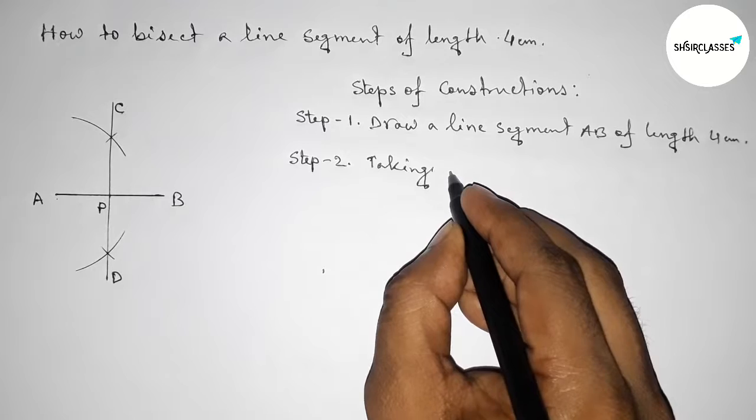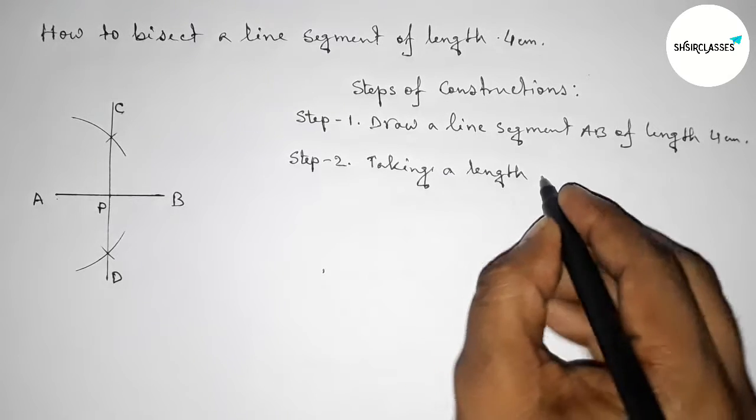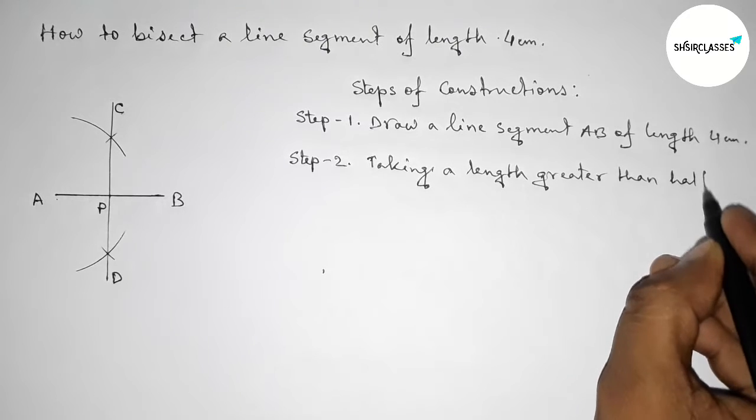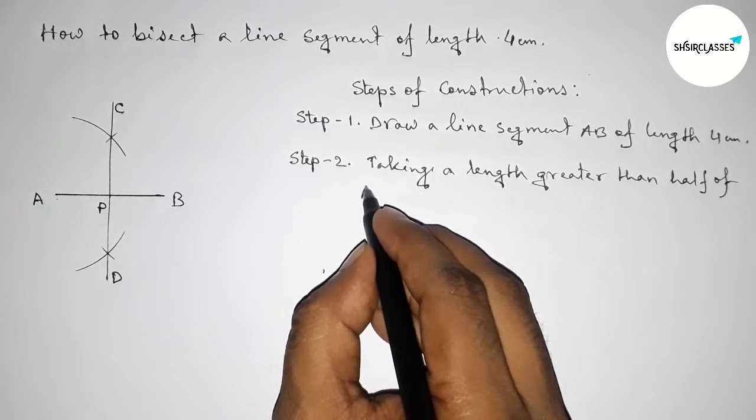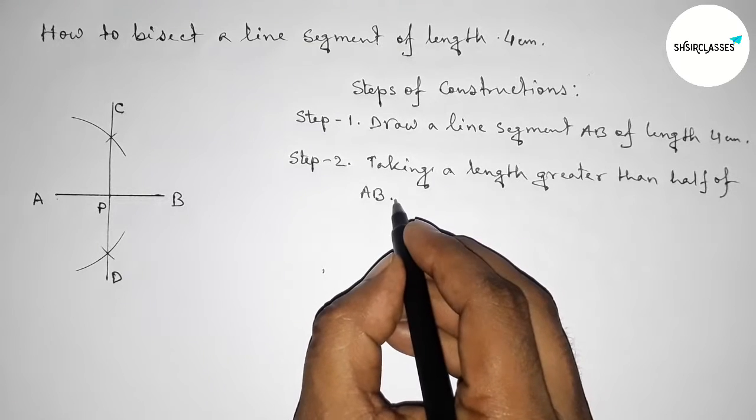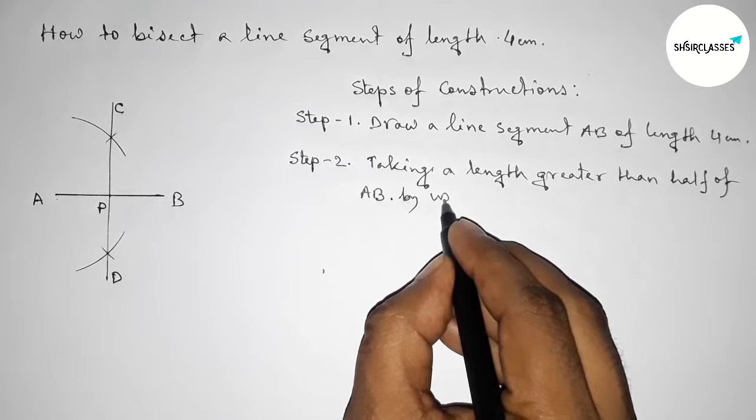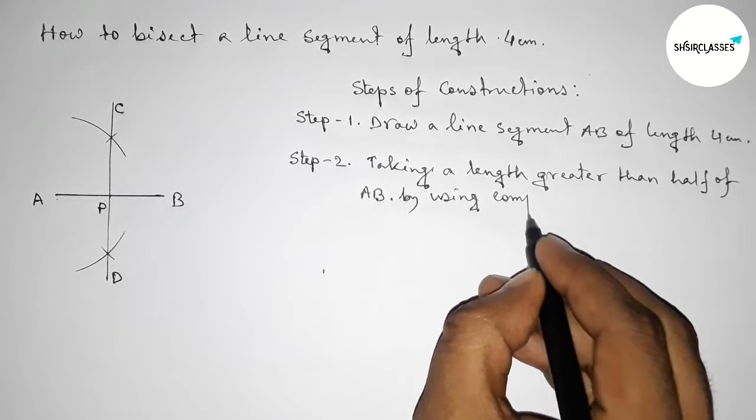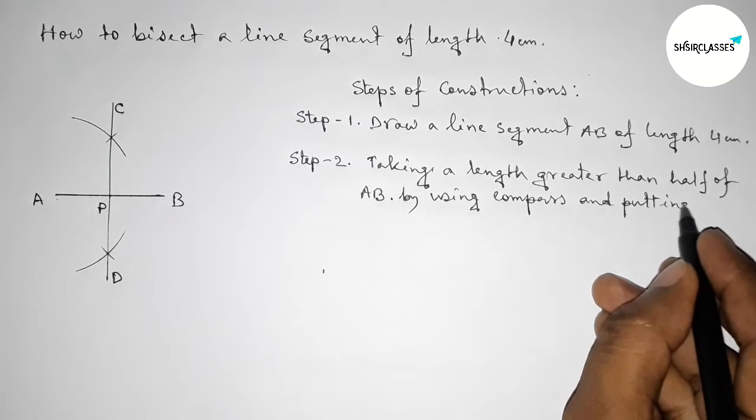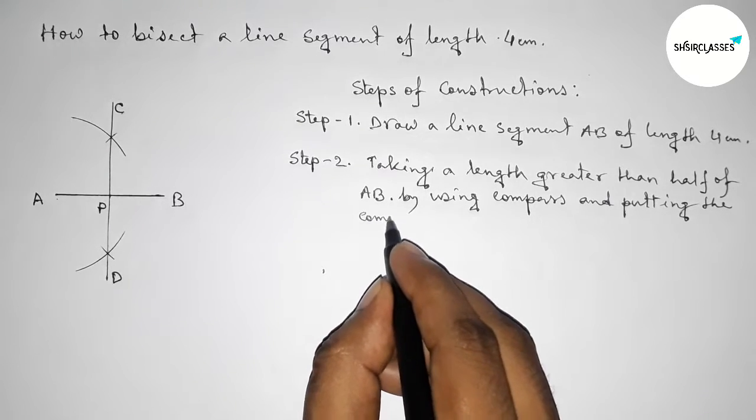here first taking a length which is greater than half of AB by using compass. Okay, then so first taking a length greater than half of AB by using compass and putting the compass on